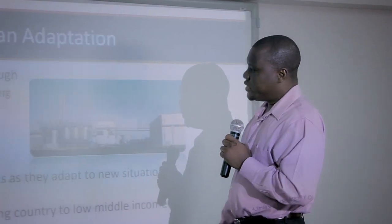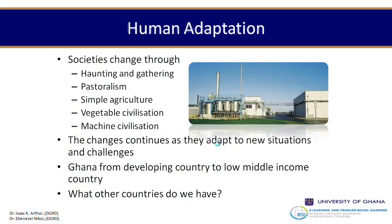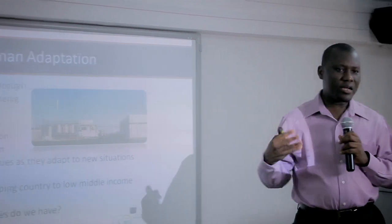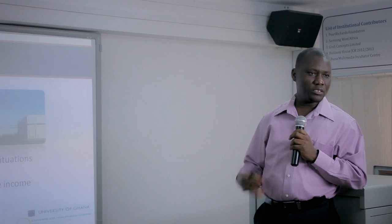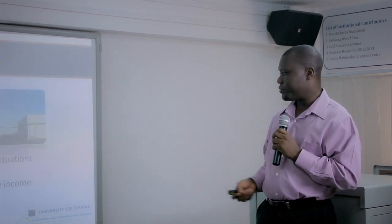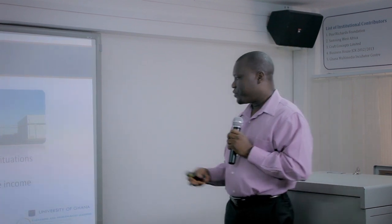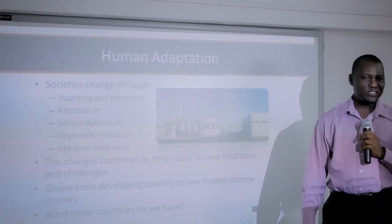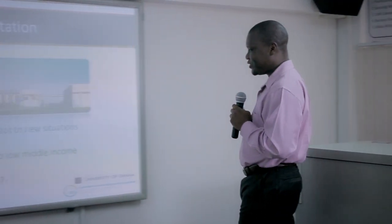These different civilizations are not static — they are constantly evolving and adapting to the environment. It is possible that even the machine society, which seems to be the final stage in this evolution, would change with time. For example, Ghana has moved from being a developing poor country into low middle income status, and there is a high chance that we would advance into the machine civilization before long.